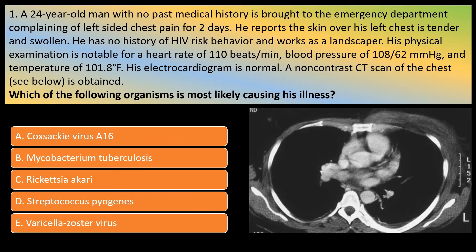A CT scan of the chest is obtained, which is shown below. Which of the following organisms is most likely causing his illness? A: Coxsackie virus A16. B: Mycobacterium tuberculosis. C: Rickettsia akari. D: Streptococcus pyogenes. Or E: Varicella zoster virus.